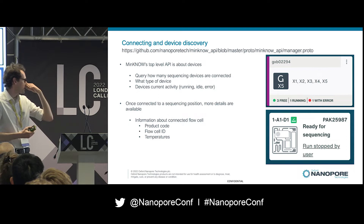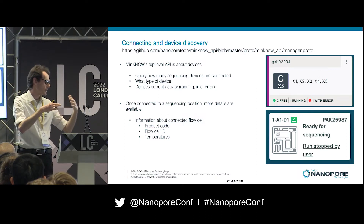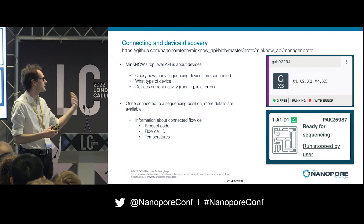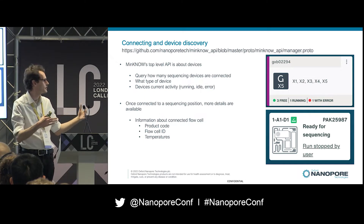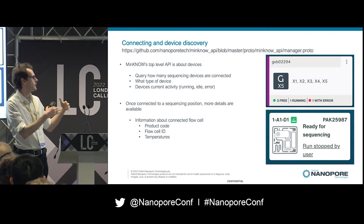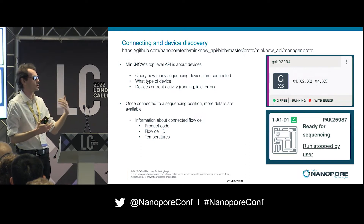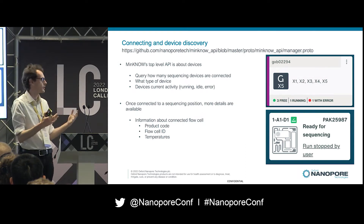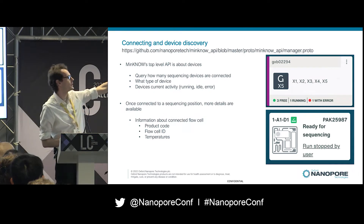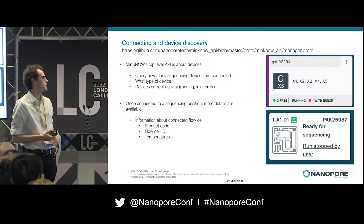Minnow's API is structured into several sections and is hierarchically structured. We start with what we call the manager interface. This API lets you query information about the sequencing positions on your device — for example, if you were to query on a GridION, you'd get information about five sequencing positions.